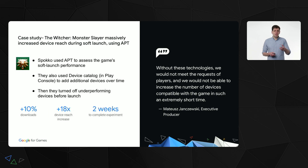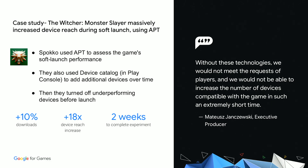The Witcher Monster Slayer used Android Performance Tuner to massively increase their device reach while soft launching. The developer Spoko used Android Performance Tuner to assess the game's performance on different devices based on actual usage during the soft launch. They also used Play Console and Device Catalog to add additional devices over time. With this information, they were able to turn off underperforming devices and confidently launch on a wide variety of devices — leading to an increase in device reach by 18-fold and an increase in downloads of 10%. Of course, this is just one case study, and every developer's experience with APT will be different.